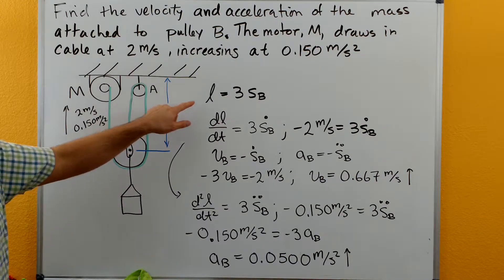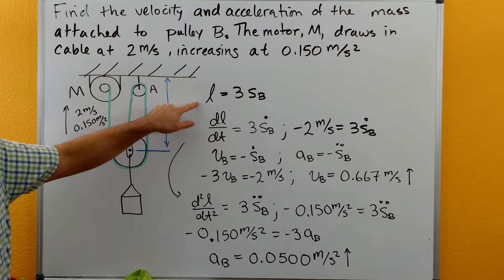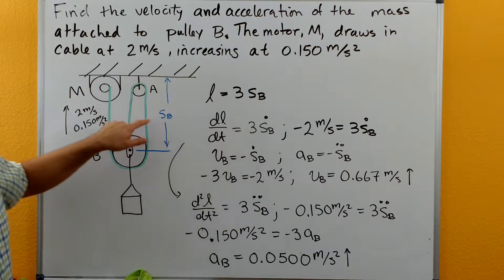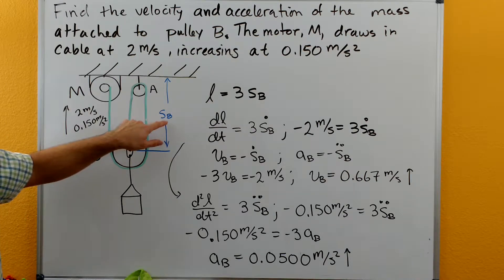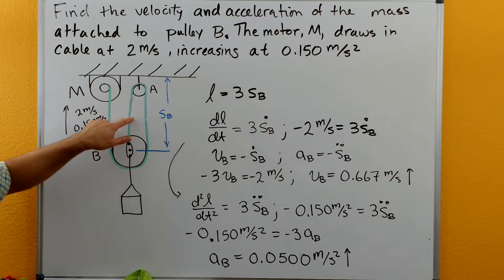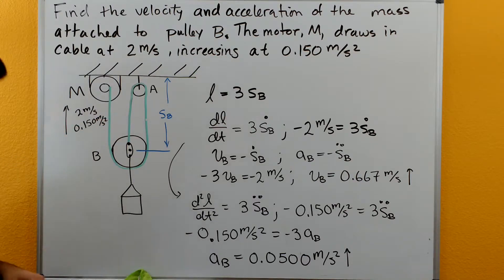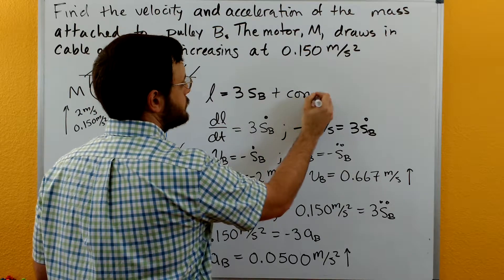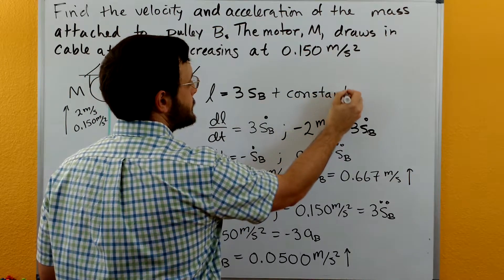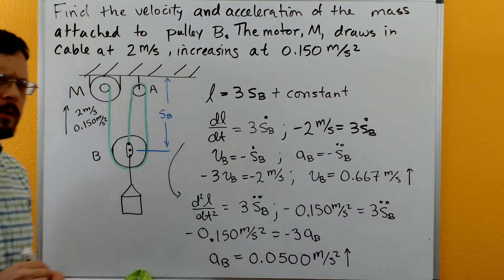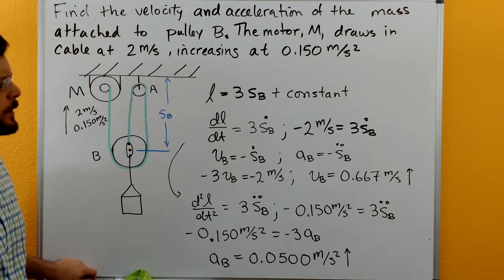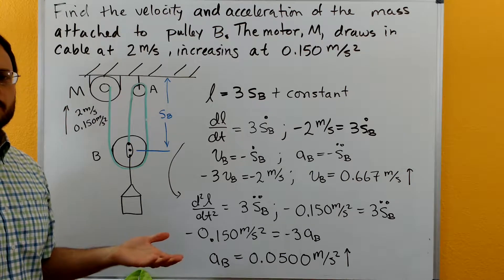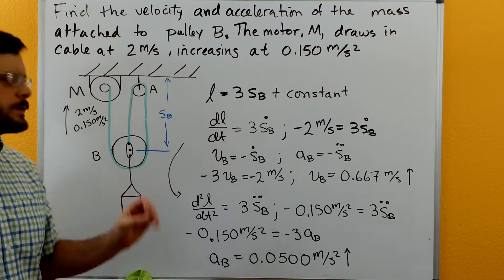Then we can develop an equation for the length of the green rope. The length of the green rope is three of these distances: SB here, SB here, and SB here. In addition there's some constant material, but we're not going to worry about that because we're going to take a derivative with respect to time, and the derivative of a constant is zero.